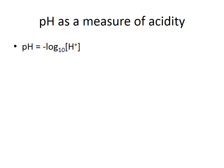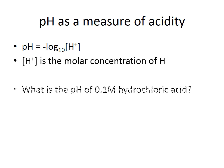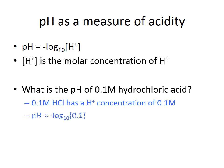pH is a measure of acidity and is simply the negative log of the molar concentration of hydrogen ions. As an example, the pH of 0.1 molar hydrochloric acid: a 0.1 molar HCl solution has an H⁺ concentration of 0.1 molar, so pH = −log(0.1) = −(−1) = 1.